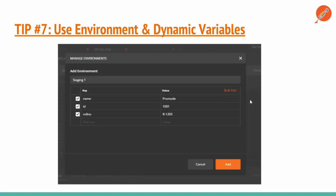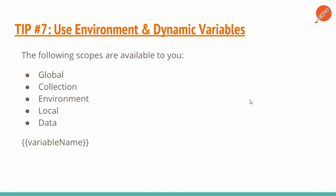Tip number seven is related to environments and dynamic variables. Use as many environments as possible. For example, if we have three staging servers and one production server, we create staging environments as well as a production environment. Every time we run our collections we can just switch them according to our environment, which is very beneficial. In the environment we also try to use dynamic variables — global, collection, environment, and local data. You can follow my other tutorials where I've discussed more about how to use environment and dynamic variables in Postman.